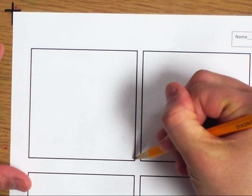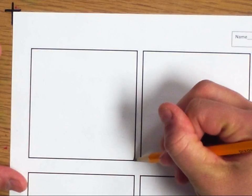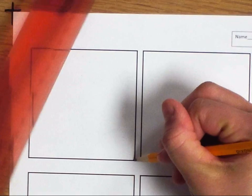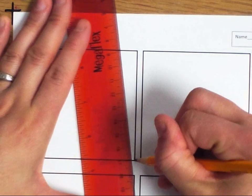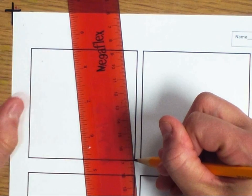To start this, you're going to place your pencil in a corner of your square. You're going to take your ruler and line it up so it touches your pencil and creates this right triangle.